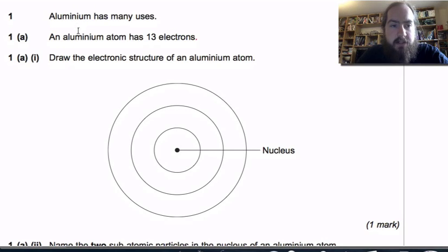Aluminum has many uses. An aluminum atom has 13 electrons. Draw the electronic structure of the aluminum atom. Okay so this is our atom here and the important words here is the fact that it says it's an atom not an ion and it tells you how many electrons we need to put in.